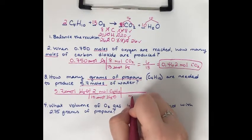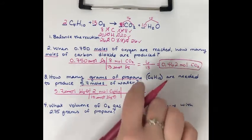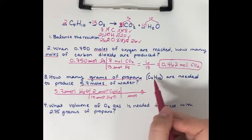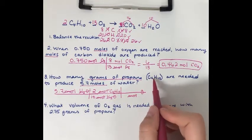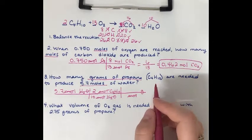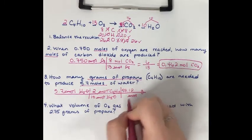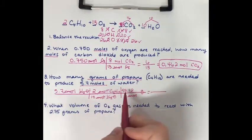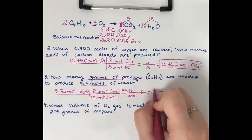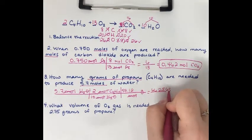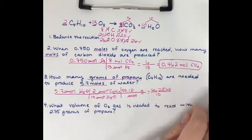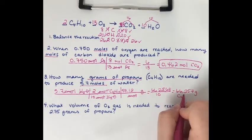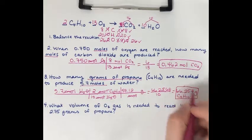Molar mass is always grams per mole, and since I'm canceling out moles it goes on the bottom. The molar mass of butane — actually this is butane, not propane, my mistake — is the mass of carbon times 4 plus the mass of hydrogen times 10, giving 58.12 grams per mole. Now I solve: I multiply across the top — 5.7 times 2 times 58.12 — and get 662.568. Multiply across the bottom: 10 times 1 is 10. Dividing gives 66.257 grams of butane, which is what the question asked for.